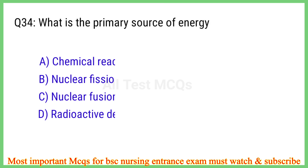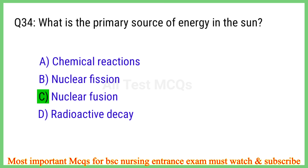Q34. What is the primary source of energy in the sun? The right answer is option C: Nuclear fusion.